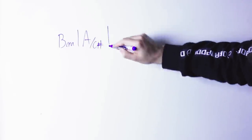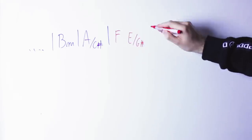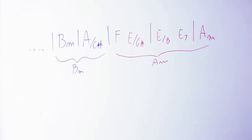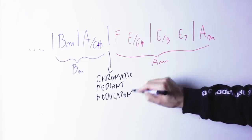Recapping the fade to black modulation we have B minor and A, then F, E, A minor. The B minor and A are in the key of B minor, the F, E and A minor are in the key of A minor, and between A and F there is a chromatic mediant motion.